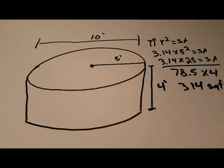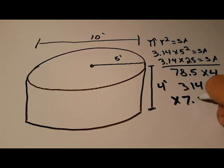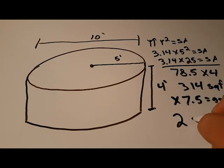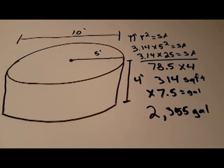To get the volume in gallons, we're going to multiply that by 7.5, because 7.5 equals gallons. That means our pool here is a total of 2,355 gallons. You can see there.